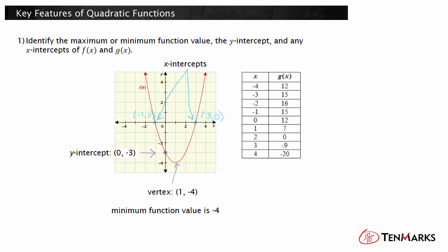g of x is represented by a table of values. Look for symmetry in the function values to help locate the vertex. You can see that in the function values, above and below the 16 are 15s, and then two spaces above and below the 16, the function values are 12s. So the point negative two, 16 lies on the axis of symmetry and is the vertex of the parabola. All other values in the table are less than 16, so 16 must be the maximum function value.